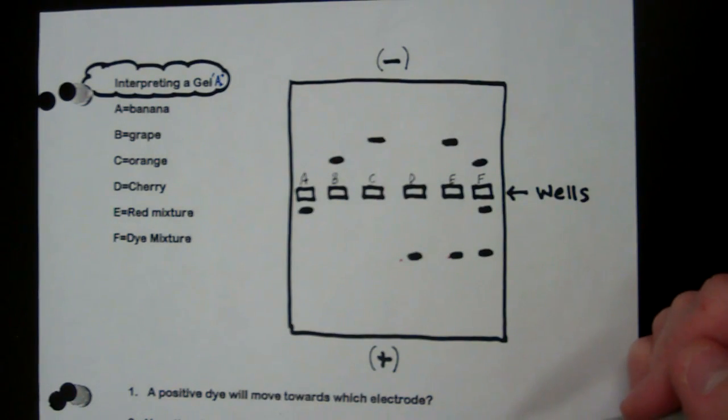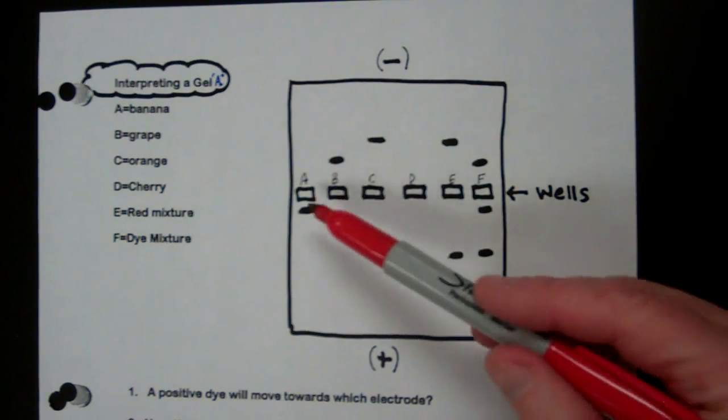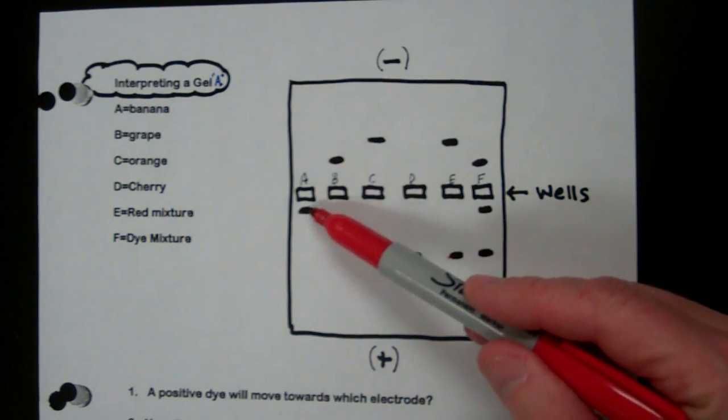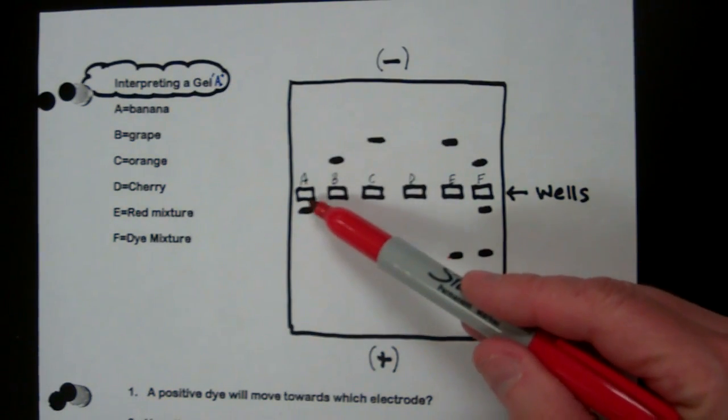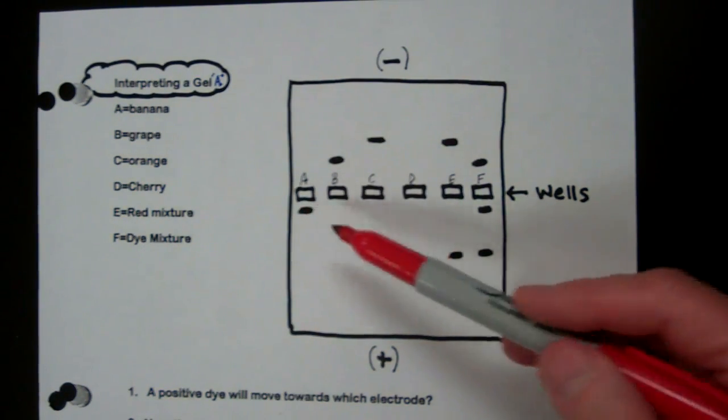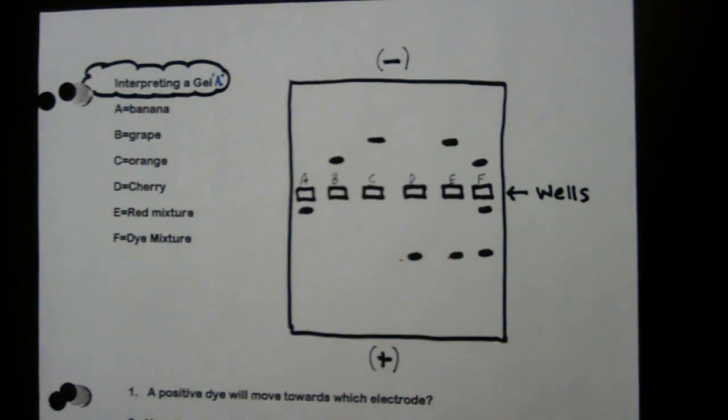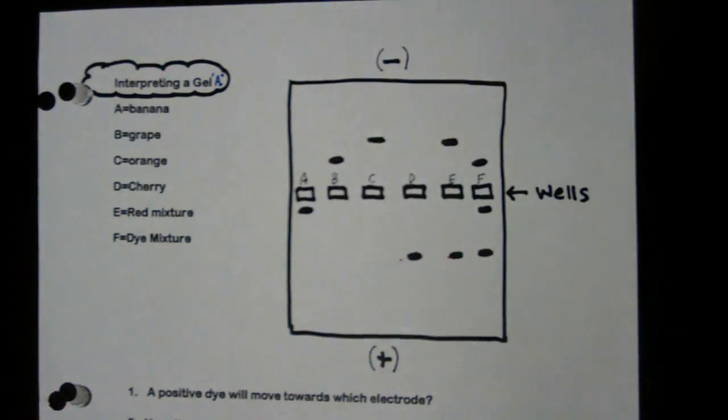The smaller the molecule, the further the distance. This one right here, not a very big distance, means it's a very large, long molecule. Alright, that's how you interpret a gel.